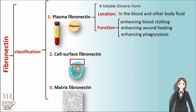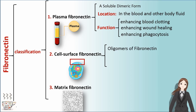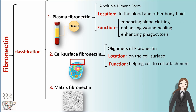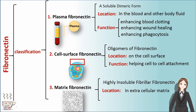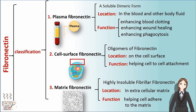The second group, cell surface fibronectin, is oligomers of fibronectin located on the cell surface. It plays a role in helping cell-to-cell attachment. Matrix fibronectin is highly insoluble fibronectin, located in the extracellular matrix, and it plays a role in helping cells adhere to the matrix.